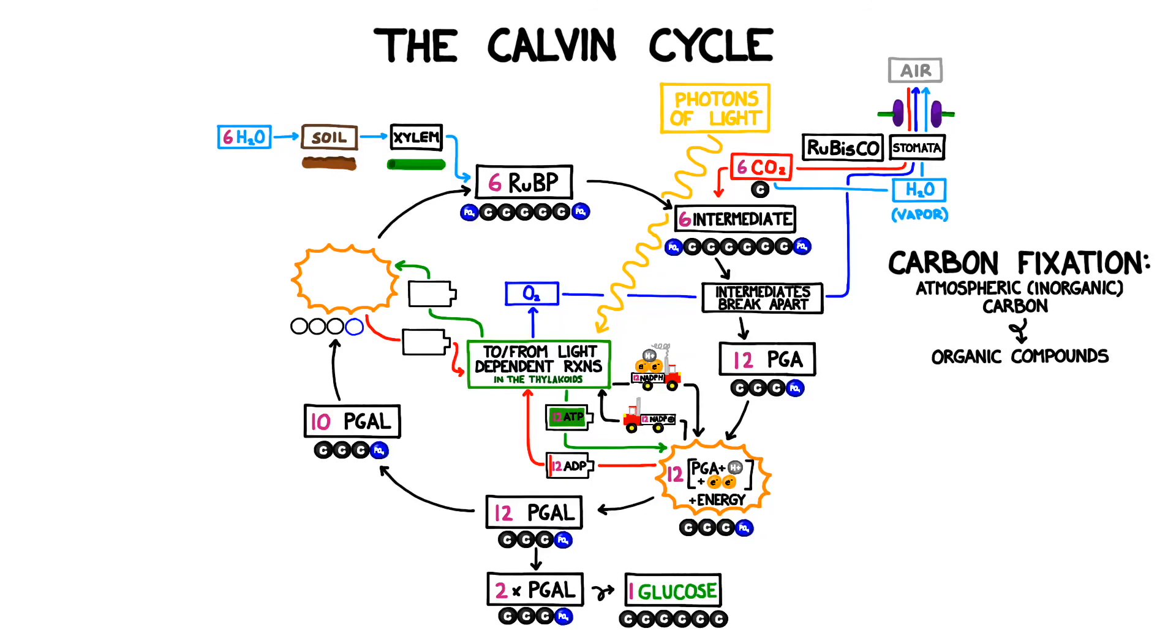The 10 PGAL contained 30 carbons in total. Remember that we started the cycle with 30 carbons. However, the process started with 6 groups of 5, not 10 groups of 3. With a burst of energy and a lot of complex chemistry, we can rearrange the molecules. The reshuffling is extremely complicated, so we'll simply refer to this step as 10 PGAL get crazy.